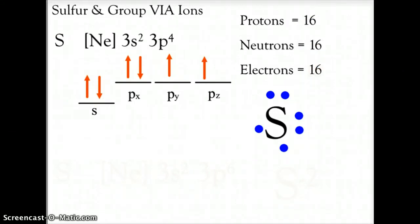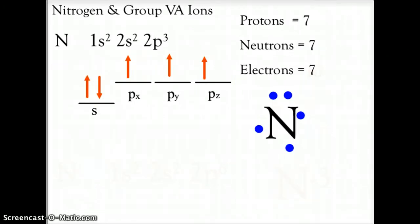Let's look at one more example, and we will go to the nitrogen group, group 5A ions, and nitrogen is 1s² 2s² 2p³. We see its electron orbitals as one empty space in each of the 3p suborbitals, and three empty spaces around its Lewis dot, seven protons, seven neutrons, seven electrons. Is it easier to give up five electrons or take on three?